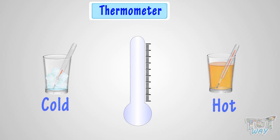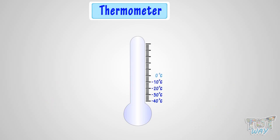It is a vertical number line. There is a red or silver vertical line inside the thermometer.